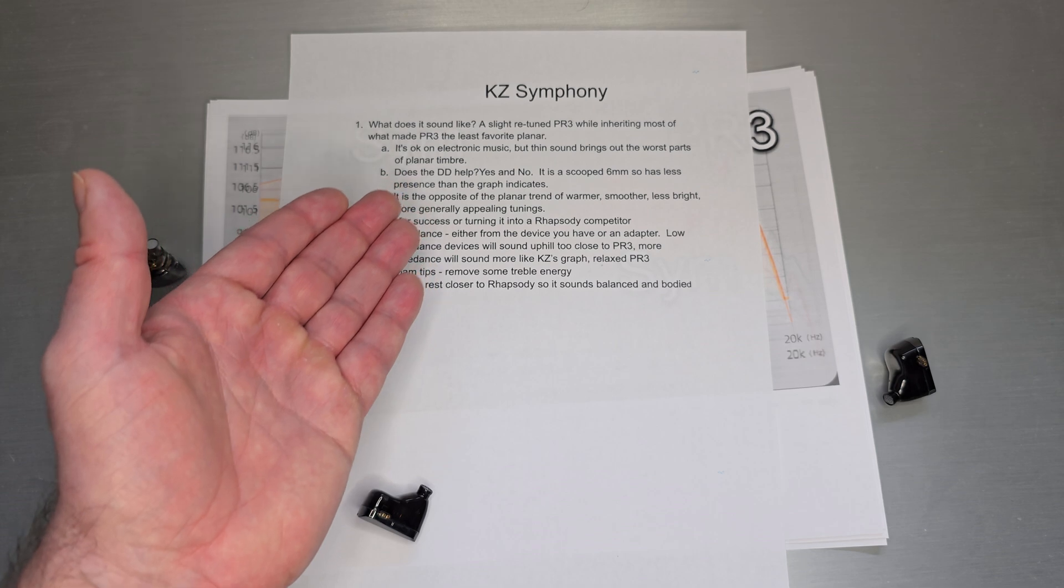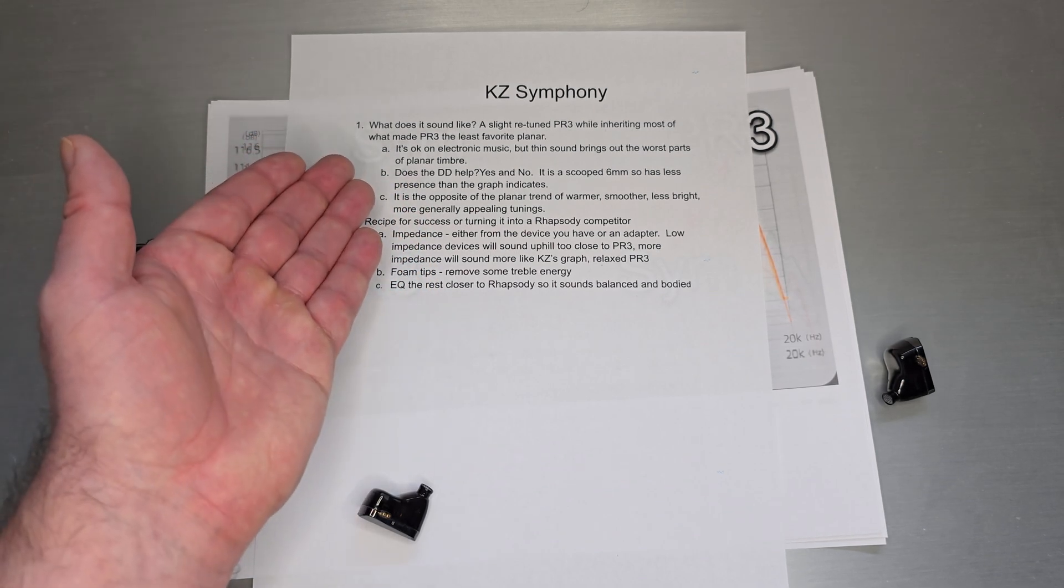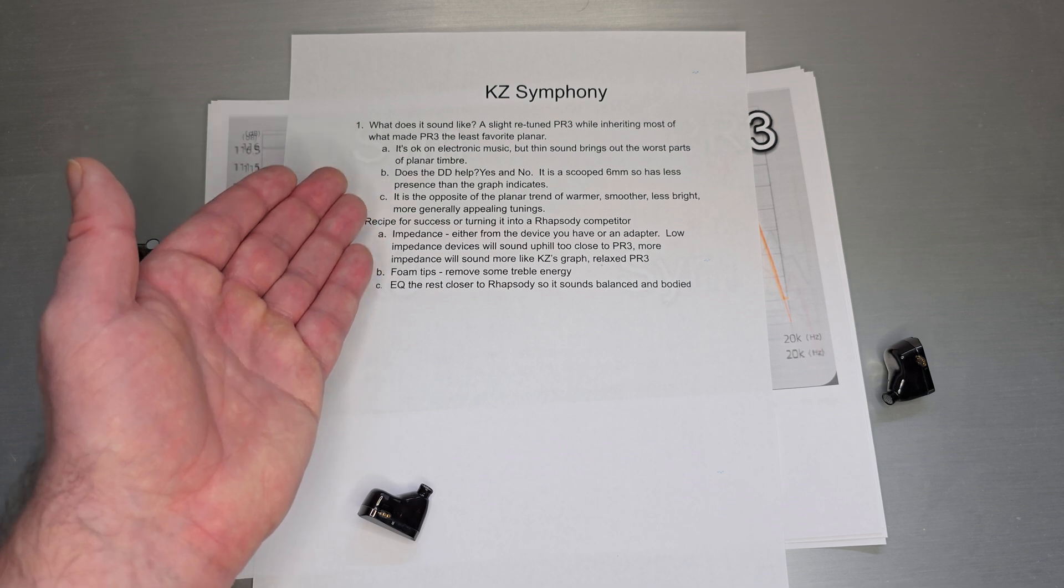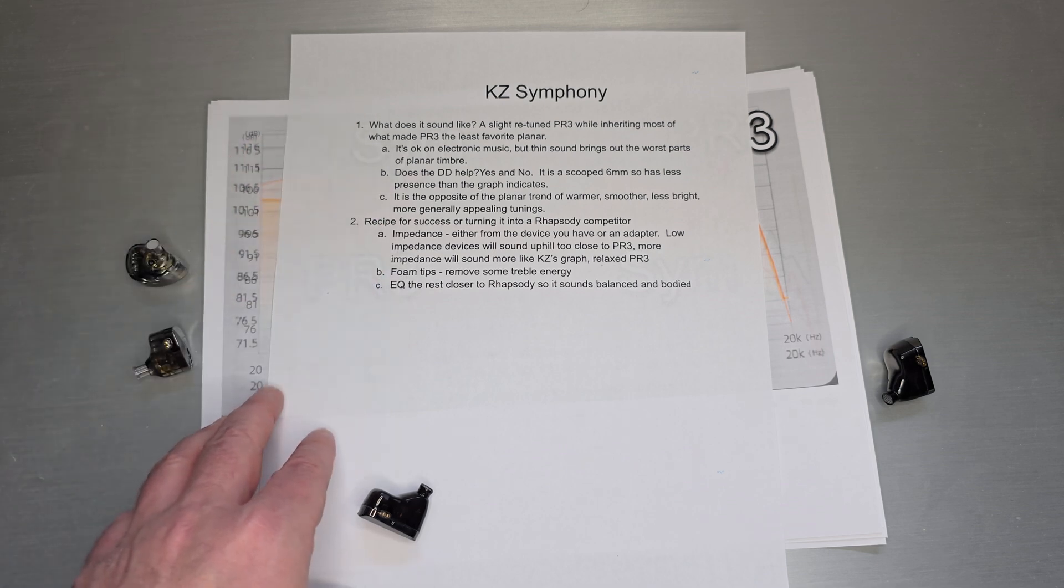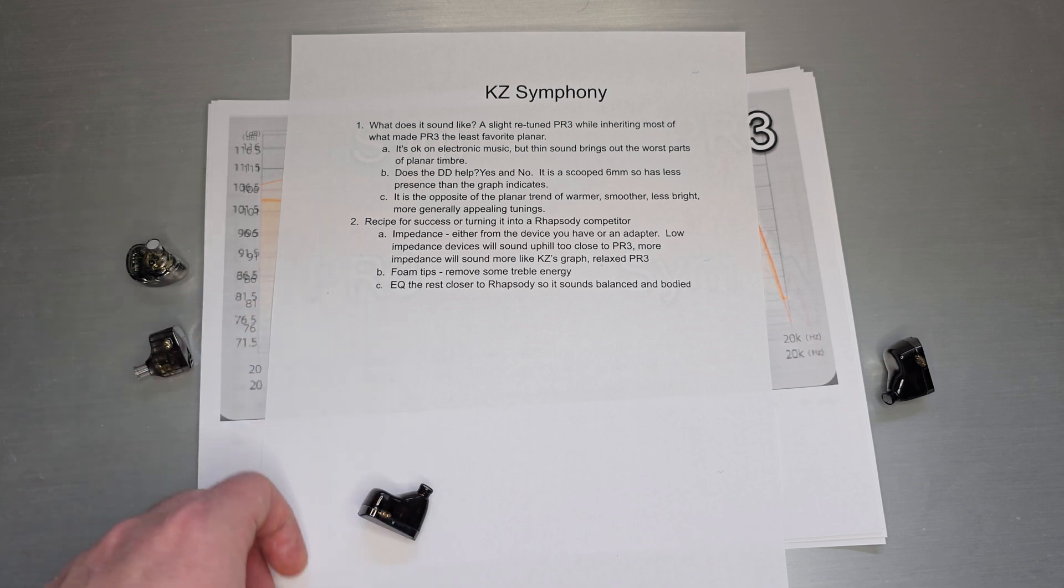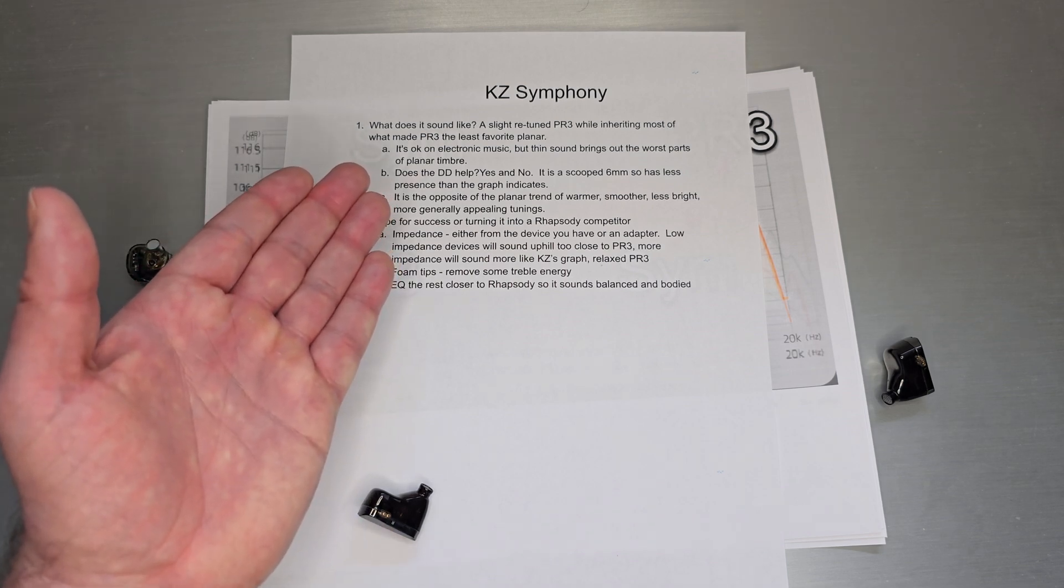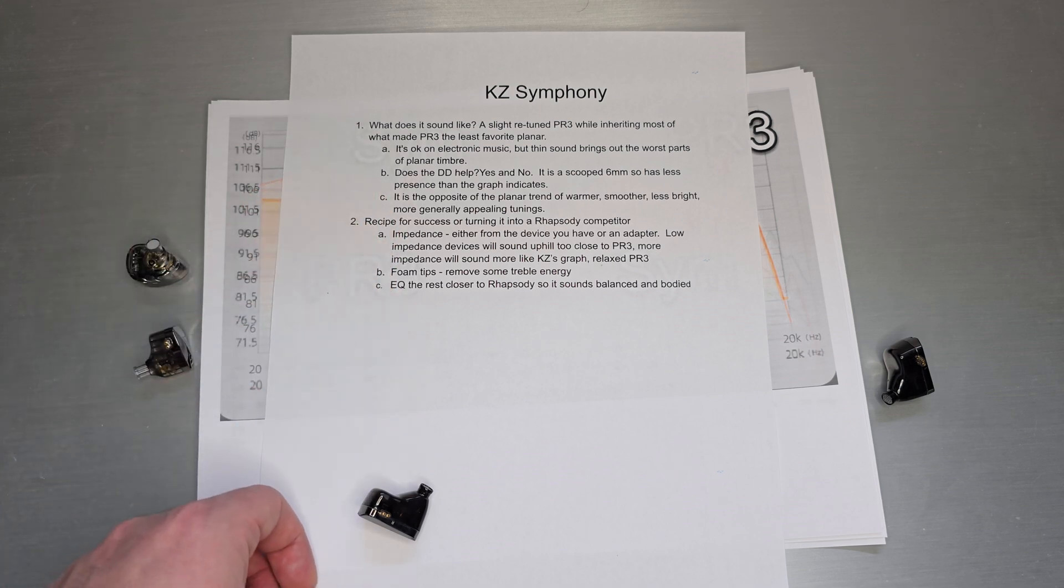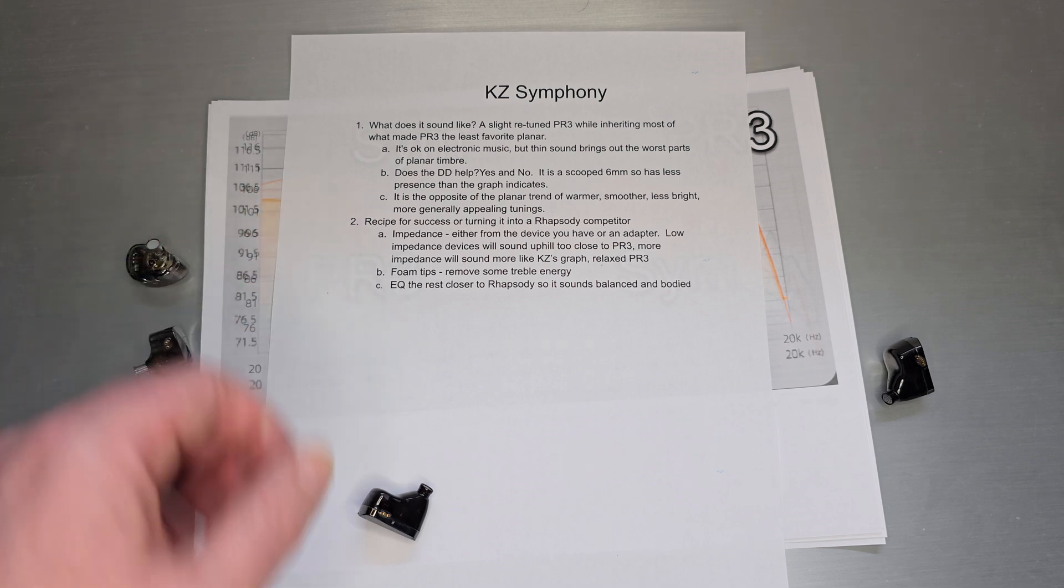But I think it did inherit most of what I didn't find all that favorable about PR3. They tended to be definitely a little bit more thinner and leaner, and it's okay on electronic music. I think that worked okay on PR3. When I went back and checked my notes on PR3 versus what I was listening to on Symphony, kind of similar. I had kind of similar complaints, and it kind of comes down to that. That thinner sound and that leaner sound tends to bring out the worst parts of planar timbre. That thinner, leaner, more sibilant sound, it leans into what people call planar timbre, right? The unnatural bit that you get on planar drivers tends to come across in that way. And their tuning tended to play right into it on PR3. And again, on Symphony, it kind of plays right into it as well.